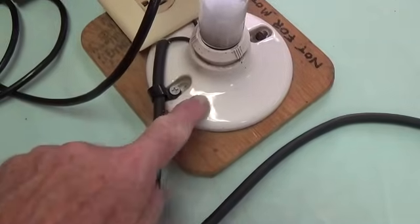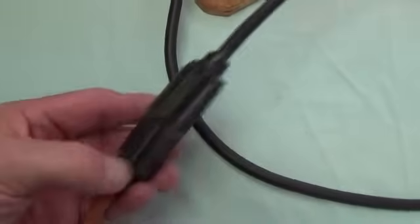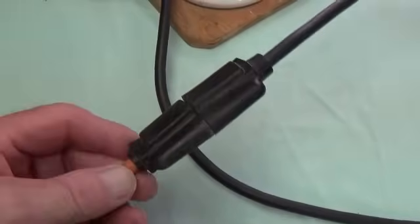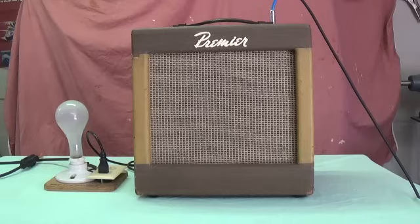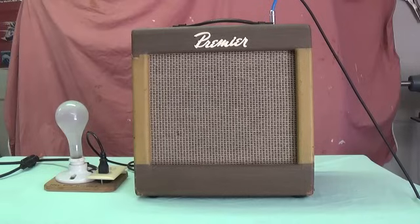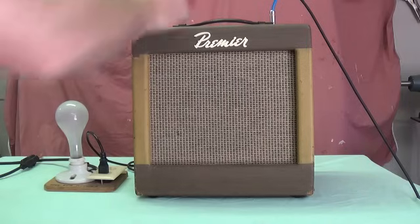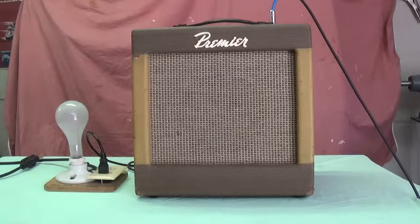Now, we simply plug the current limiter into either an extension cord or into the wall outlet. And then we plug our amplifier into the receptacle. Here we have a snazzy old Premier amp plugged into the current limiting device. Let me switch the amp on.